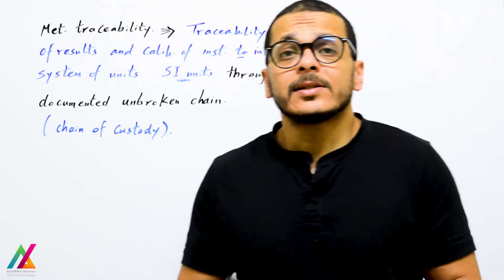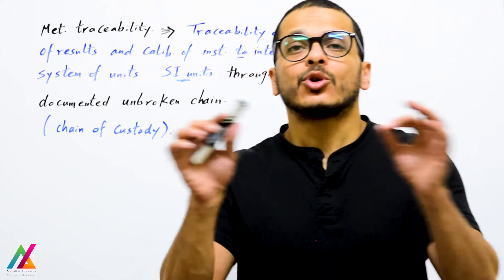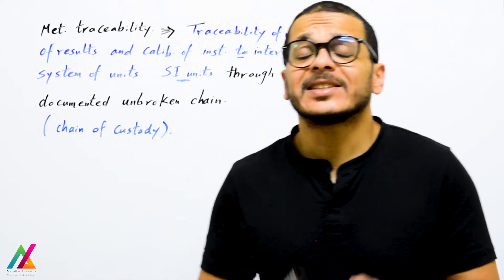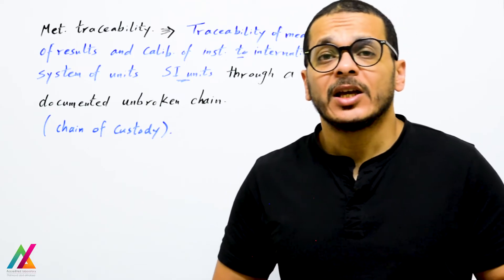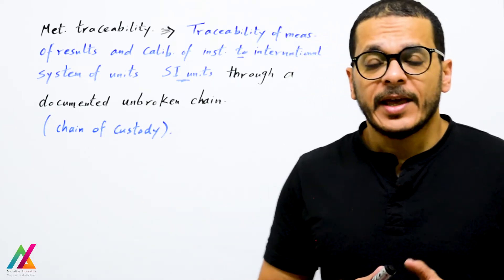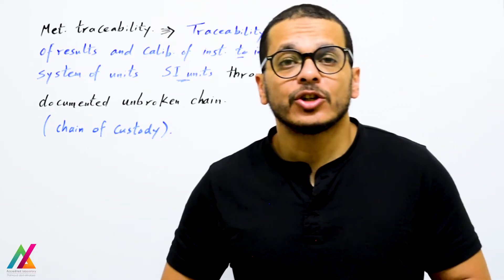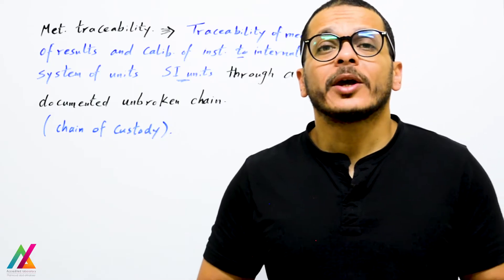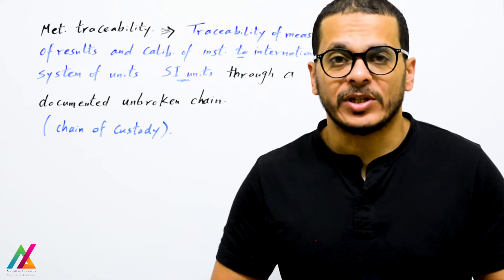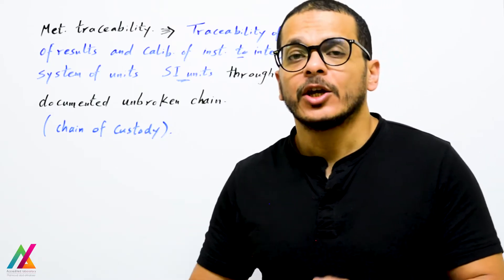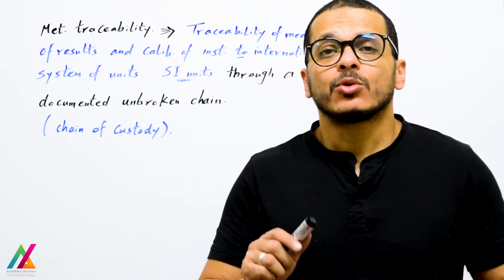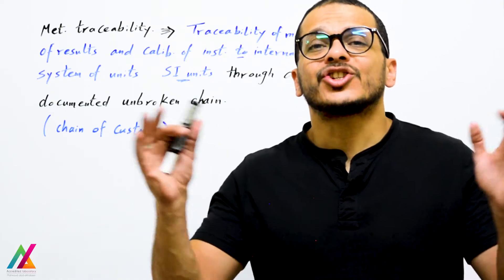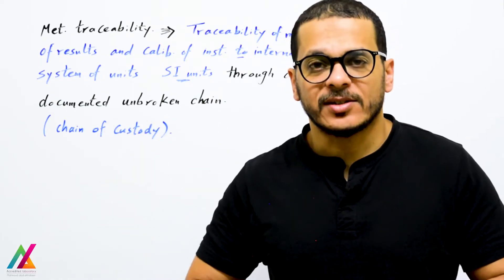What does metrological traceability mean? Metrological traceability is the traceability of measurement results and calibration of measuring instruments to the International System of Units — SI units — through a documented unbroken chain, or chain of custody.